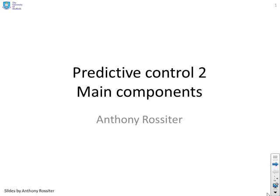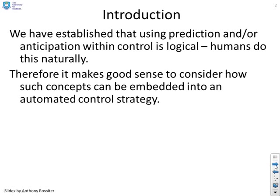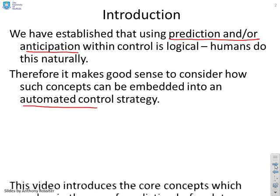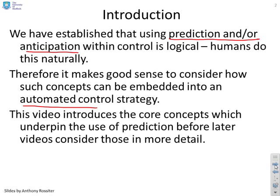The second video looks at the main components of predictive control. We've established in the first video that using prediction, or anticipation if you prefer, within control design is logical and something that humans do naturally. Therefore it makes good sense to consider how we can take this concept and embed it into an automated control strategy. This video is going to look at the core concepts which underpin the use of prediction in control design, and later videos will gradually consider each of these concepts in more detail.